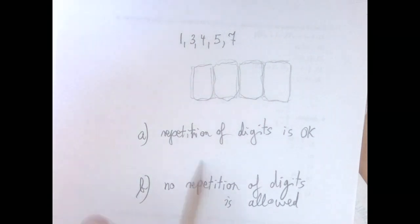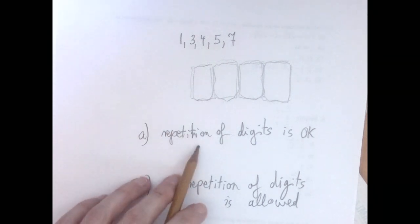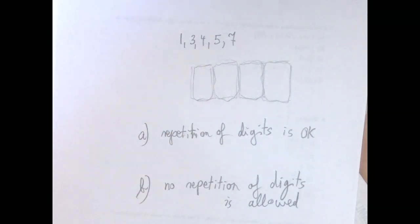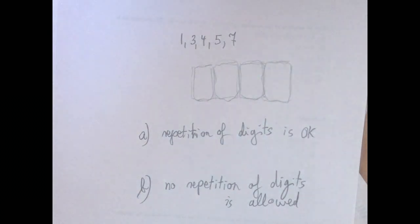So the first part is just that question. And the second part is the same question, but now the repetition of digits is not allowed. And so what that means is that in the first part, it is allowed. So we can have a four-digit number that says 1333, or 5555.